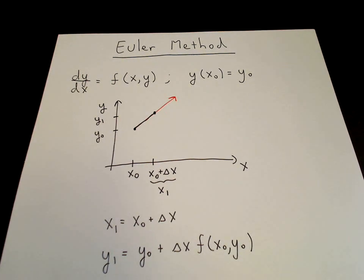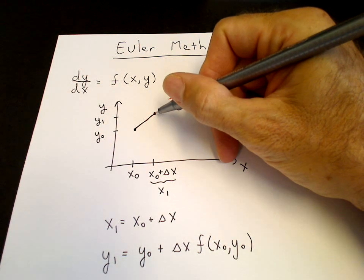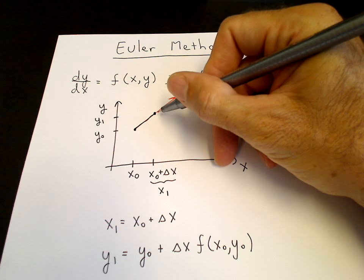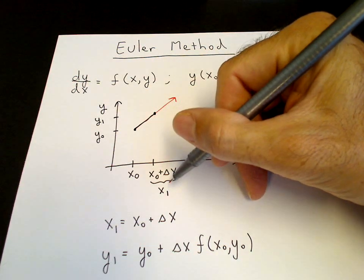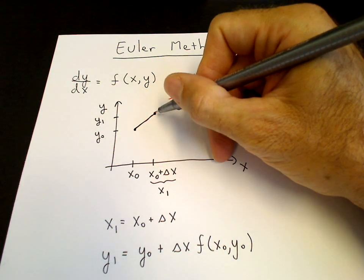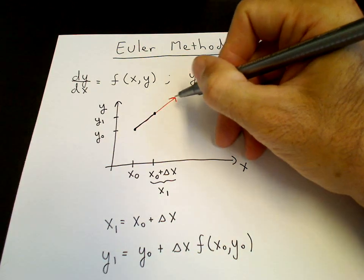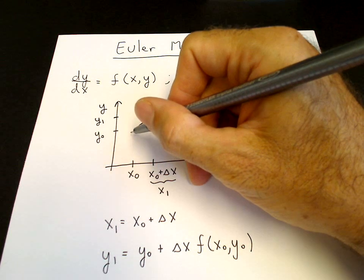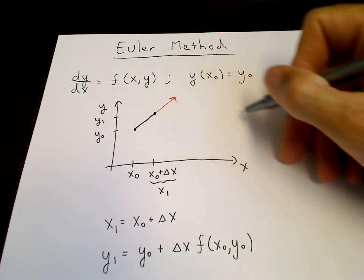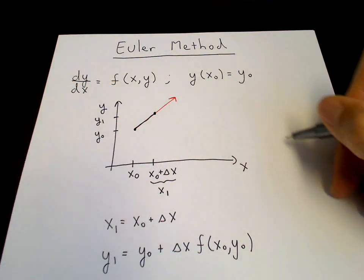So now the slope of the tangent line to the solution curve at the value x₁ could have changed slightly. If the function, if y of x is curving this way, negative curvature,